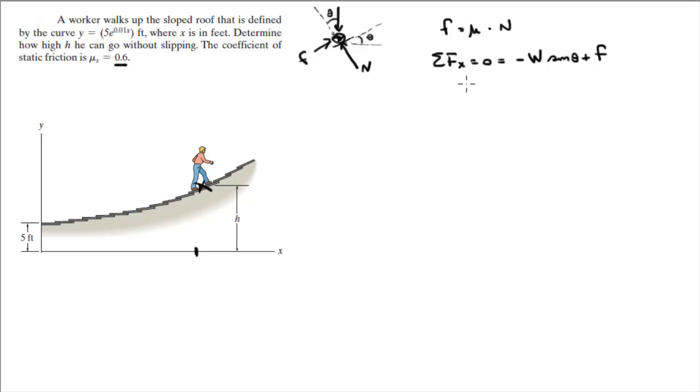Which is equal to the weight times the sine of theta plus the friction, which means that the weight times the sine of theta is equal to 0.6 times the normal. 0.6 is the coefficient of friction, and n is the normal. So that's our first equation, let's call it equation 1.